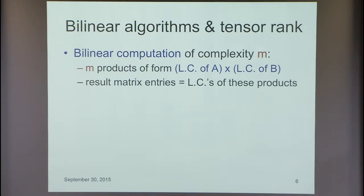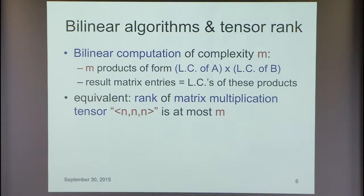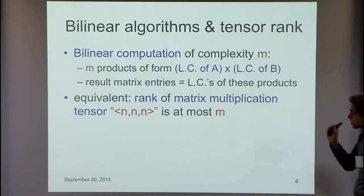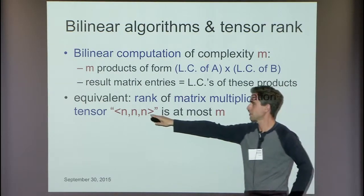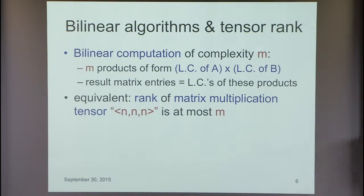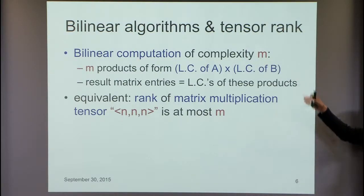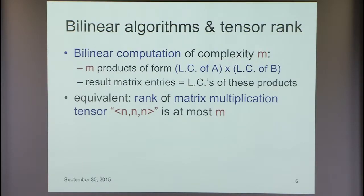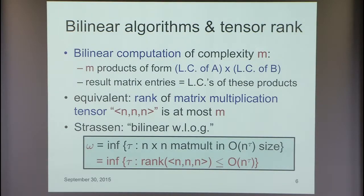You take the result to be linear combinations of those products. This is a bilinear computation and you measure its complexity by the number of multiplications. As many of you know, saying the rank of the matrix multiplication tensor is at most M is exactly equivalent to having a bilinear computation of complexity M. A natural question for this crowd: do we really need to be doing bilinear computations? Maybe there are weird cancellations from arithmetic circuits.